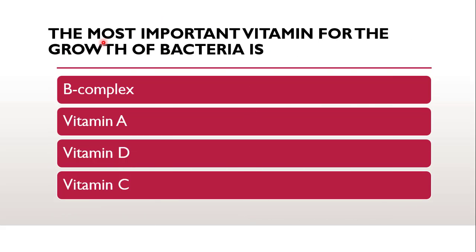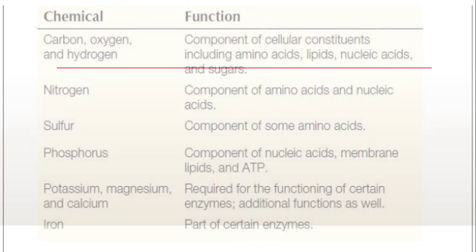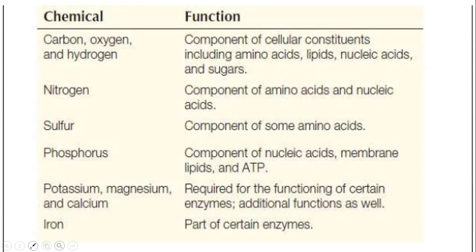Next question: the most important vitamin for the growth of bacteria is whether it is B complex, vitamin A, vitamin D, or vitamin C. The correct answer is B complex, which is required for synthesis of DNA, RNA, and proteins, and forms a major component for cell growth and metabolism. Along with that, certain other chemicals are required — calcium, magnesium, and potassium are required for the functioning of certain enzymes.